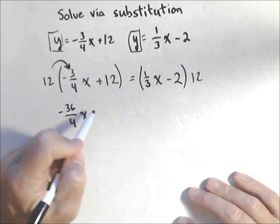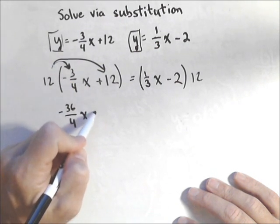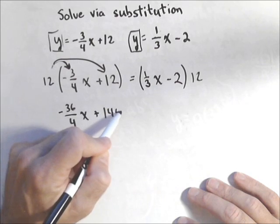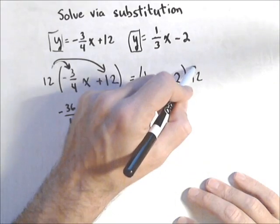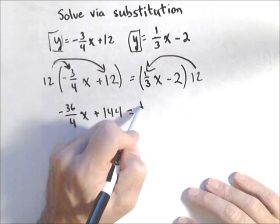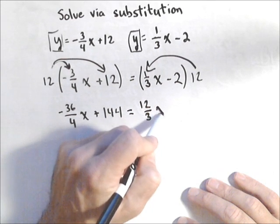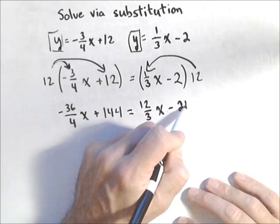Equals, now this has to distribute to both parts, 12 over 3x minus 24.